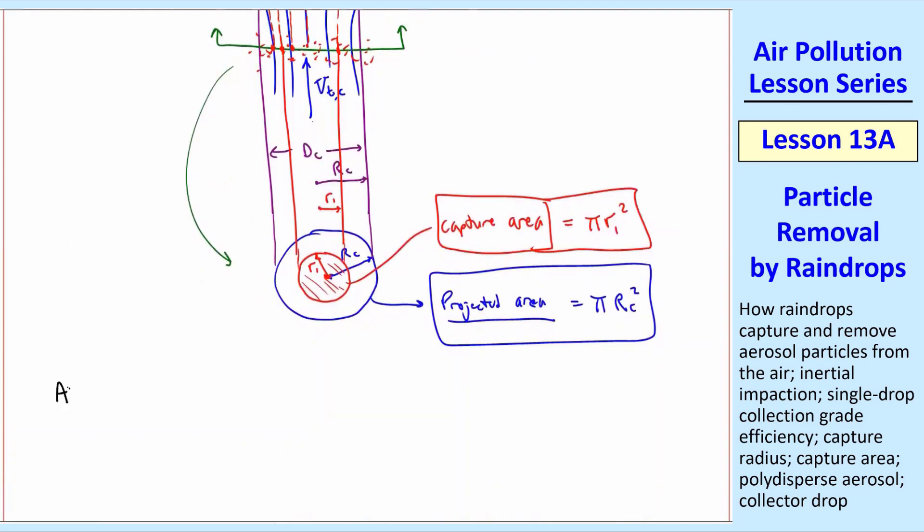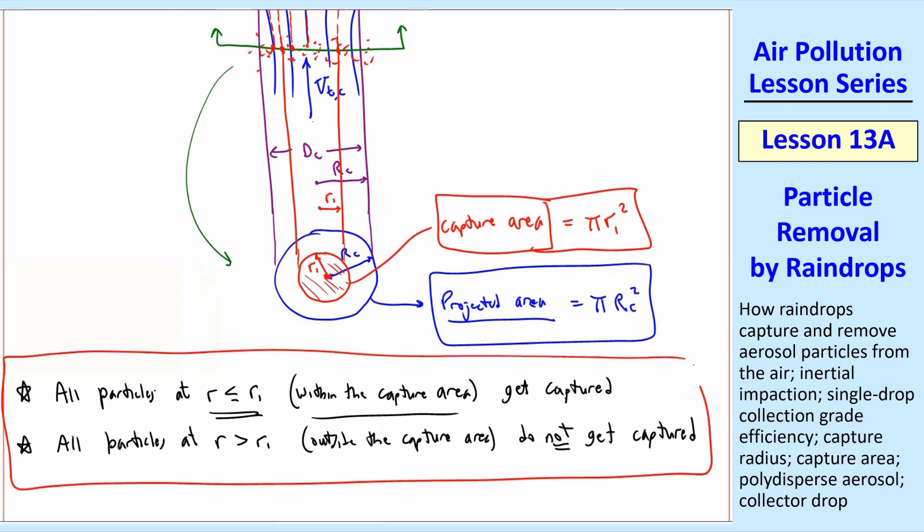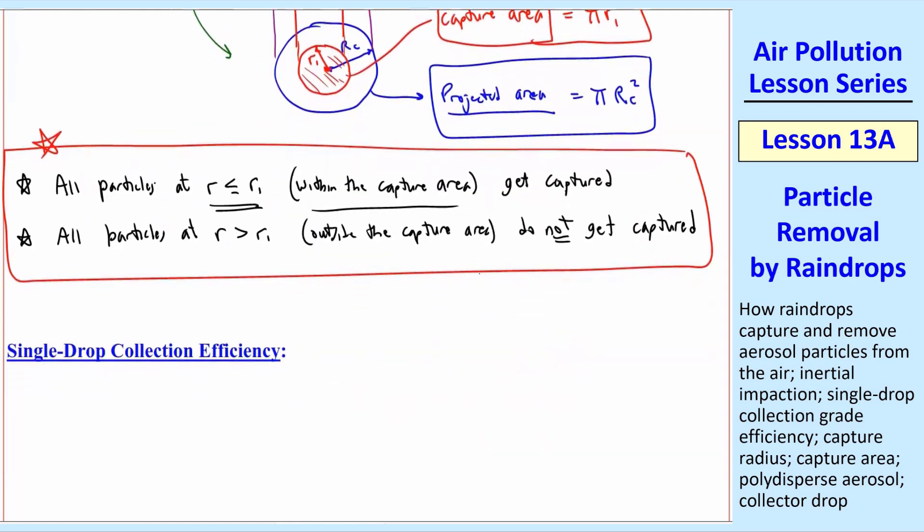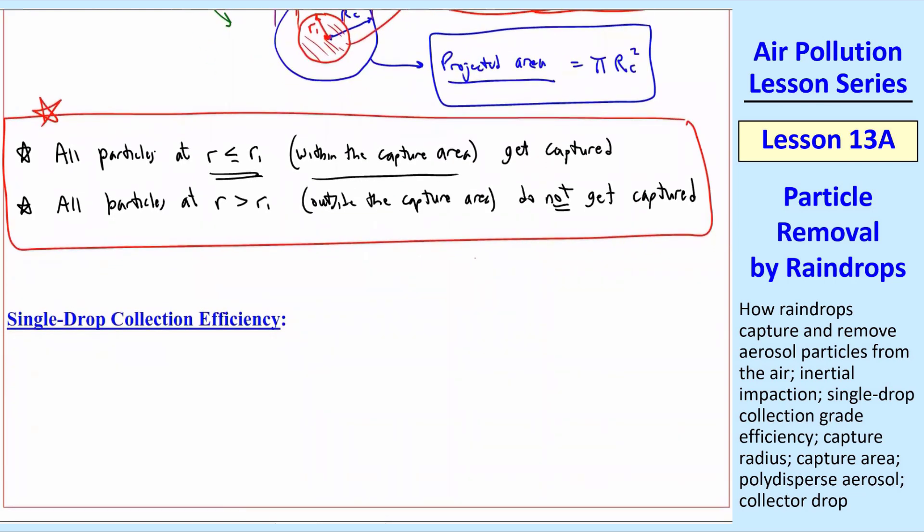From this diagram, we can see that all particles that are directly under the drop do not get captured. Only some of them do, namely the ones that are within this red capture area. So I can summarize by saying all the particles at R less than R1, in other words they're within the capture area, get captured. And all particles that are greater than R1, which is outside the capture area, do not get captured. So that's pretty simple analysis, except we don't know what R1 is. I'll give you some equations for R1 next time. But for now, I want to just define a single drop collection efficiency. It's a grade efficiency.